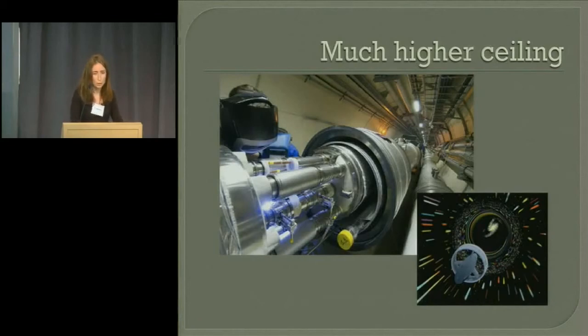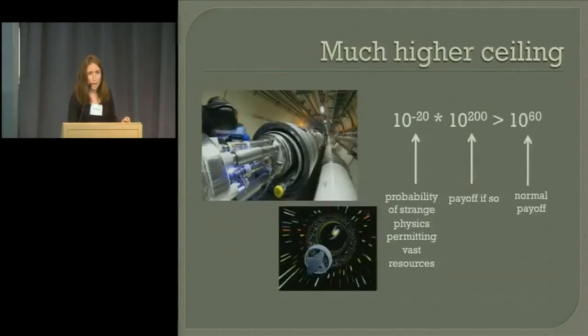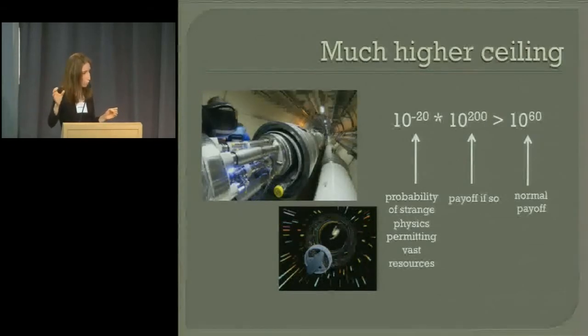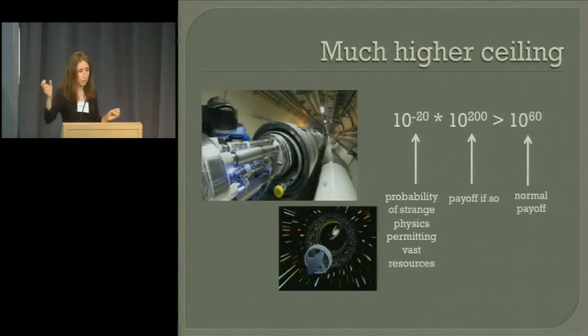So this is supposed to be a picture of a physics experiment and a wormhole. And the idea is that if you attach even a fairly small probability, even a very small probability, to the universe having strange physics that permits access to vast amounts of resources, 10 to the negative 20, and if those vast amounts of resources are much more than 10 to the 20 times as large as our resources, let's say it can get 10 to the 100 copies, then that could easily exceed the number of resources that it can get by just going with business as normal.